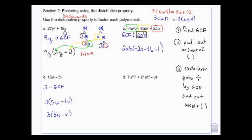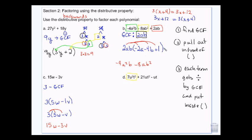That's a check — if I distribute it back in, I'll get what I started with. If I distribute this back in: 2 times negative 2 is negative 4, a times a is a squared, b; 2 times negative 4 is negative 8, a, b squared; 2 times 1 is 2, a, b. So if I multiply it back in I'll get what I started with. You can use that to check yourself.